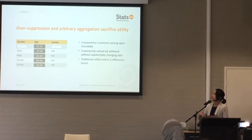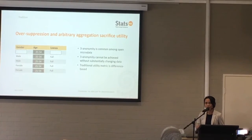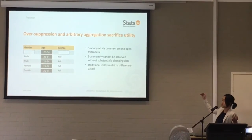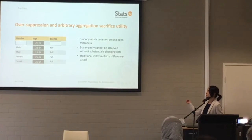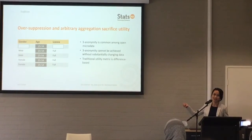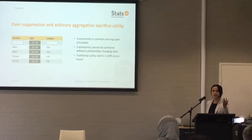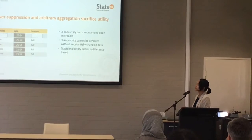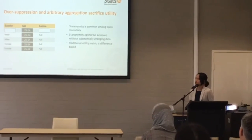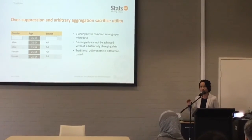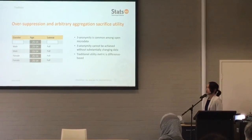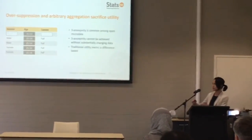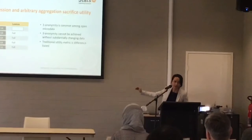Here we notice an important balance. On one hand, we need to satisfy at least 3-anonymity, which is very common in the literature. On the other hand, we still want the information to remain useful. The balance between risk and utility is a very important topic in SDC. However, traditional utility metrics are very difference-based — whether it's the propensity score or the difference of eigenvalues, they all measure whether you make substantial changes to the dataset.